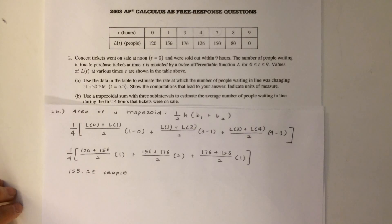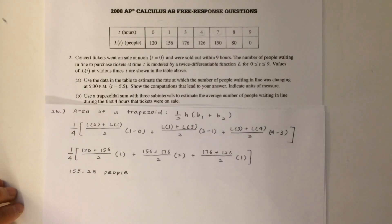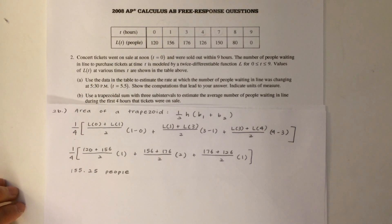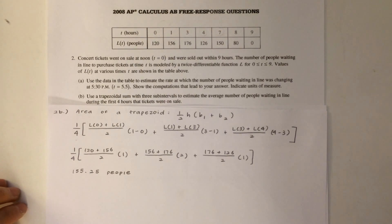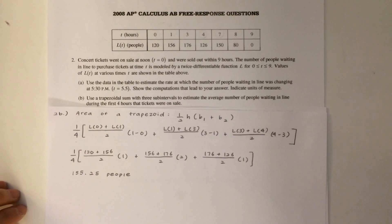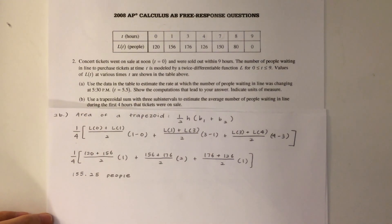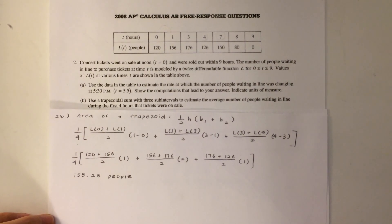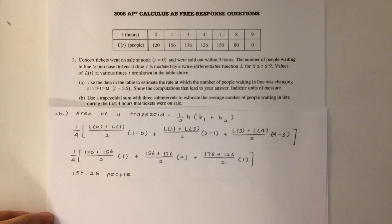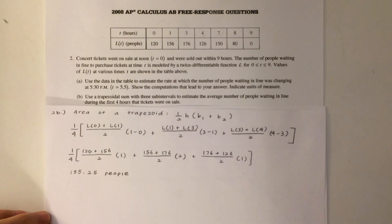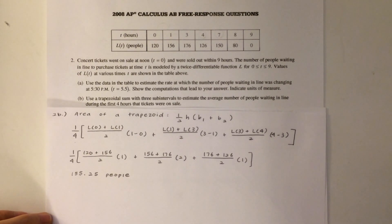The most important part in this question, in my opinion, would be realizing that since the question is asking for the average number of people during the first 4 hours, we divide the sum of the trapezoids by 4. The question tells us to use 3 intervals, so we add up the trapezoids from t equals 0 to 1, 1 to 3, and 3 to 4.